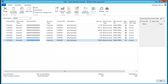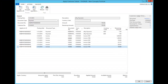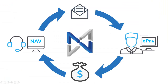A line will then be added to a cash receipt journal within Dynamics NAV, and automatically be applied to the corresponding invoices. That's how a customer can securely pay their invoice using ePay Advantage, and have it integrated seamlessly back into Dynamics NAV without any additional work from internal staff.